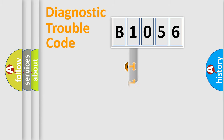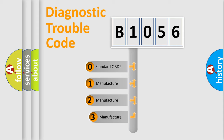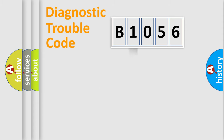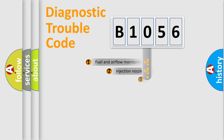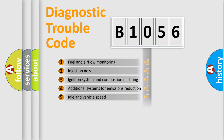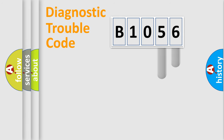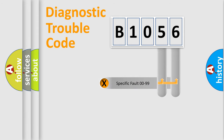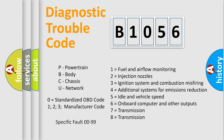This distribution is defined in the first character of the code. If the second character is expressed as zero, it is a standardized error. In the case of numbers 1, 2, or 3, it is a more specific expression of a car-specific error. The third character specifies a subset of errors. The distribution shown is valid only for the standardized DTC code. Only the last two characters define the specific fault of the group. Such a division is valid only if the second character code is expressed by the number zero.